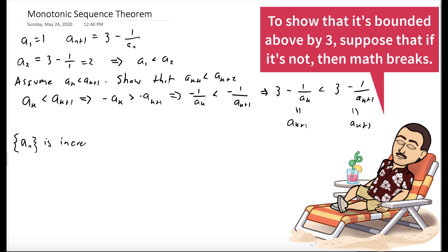So a_n is increasing. Now we want to show that it's bounded above. And since it's increasing, each term has to be at least 1, right? Our first term is 1, and the following terms are larger. So each term is at least 1.